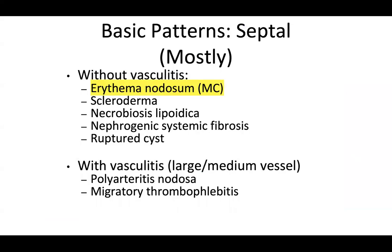The basic septal paniculitis includes types without vasculitis or with vasculitis. The most common septal paniculitis is erythema nodosum. Without vasculitis, you can also have scleroderma, necrobiosis lipoidica, nephrogenic systemic fibrosis, and ruptured cysts. With septal inflammation and vasculitis involving large and medium vessels, you can see polyarteritis nodosa and migratory thrombophlebitis.